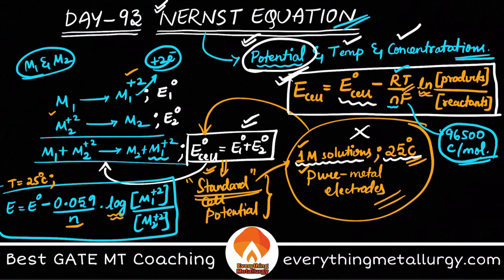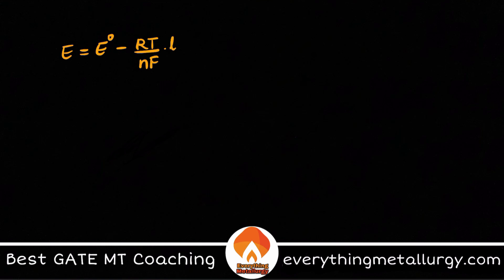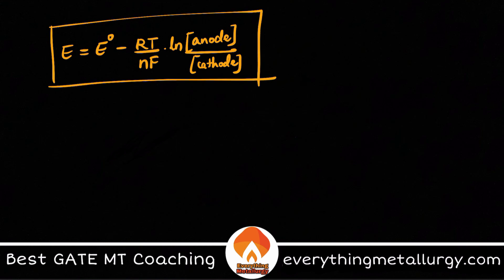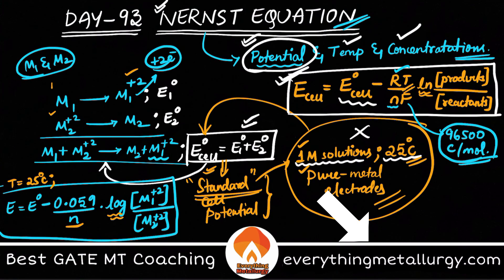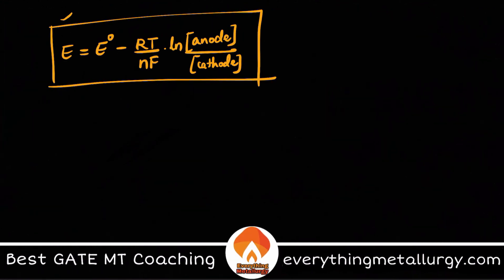One more important point — people ask about writing the Nernst equation in terms of anode and cathode. You can write it as: E = E° − (RT/nF) × ln([anode concentration] / [cathode concentration]). You can observe that M1 undergoing oxidation is your anode, and M1²⁺ appears in the numerator, which is how you arrive at this form.